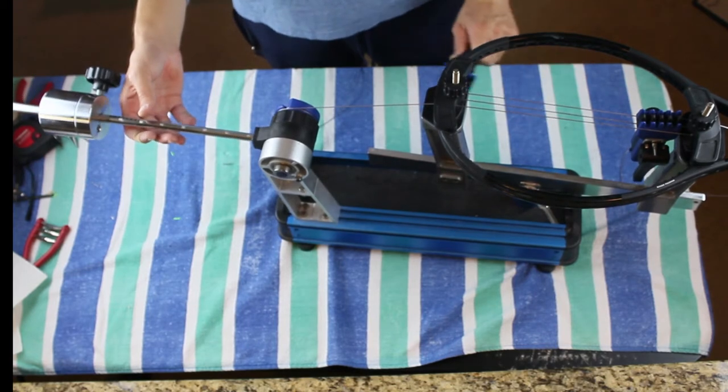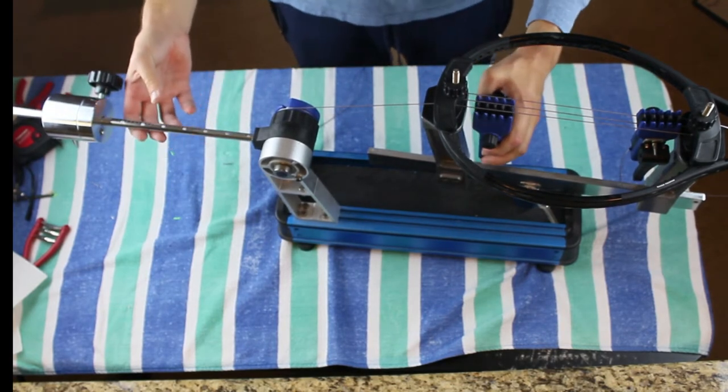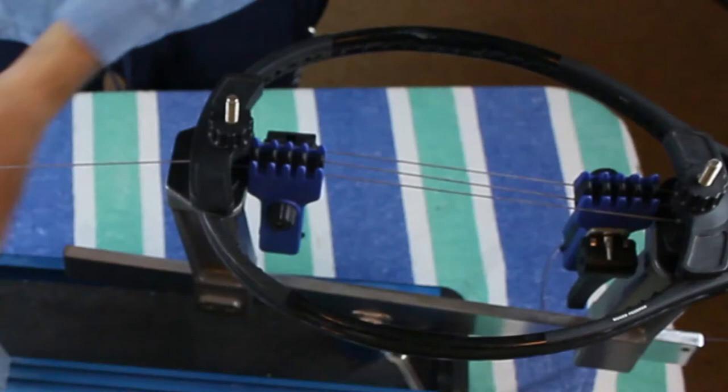So after getting that tension correctly, as you see, we have the clamps on each side. And now we can just go ahead and string just like we do normally.